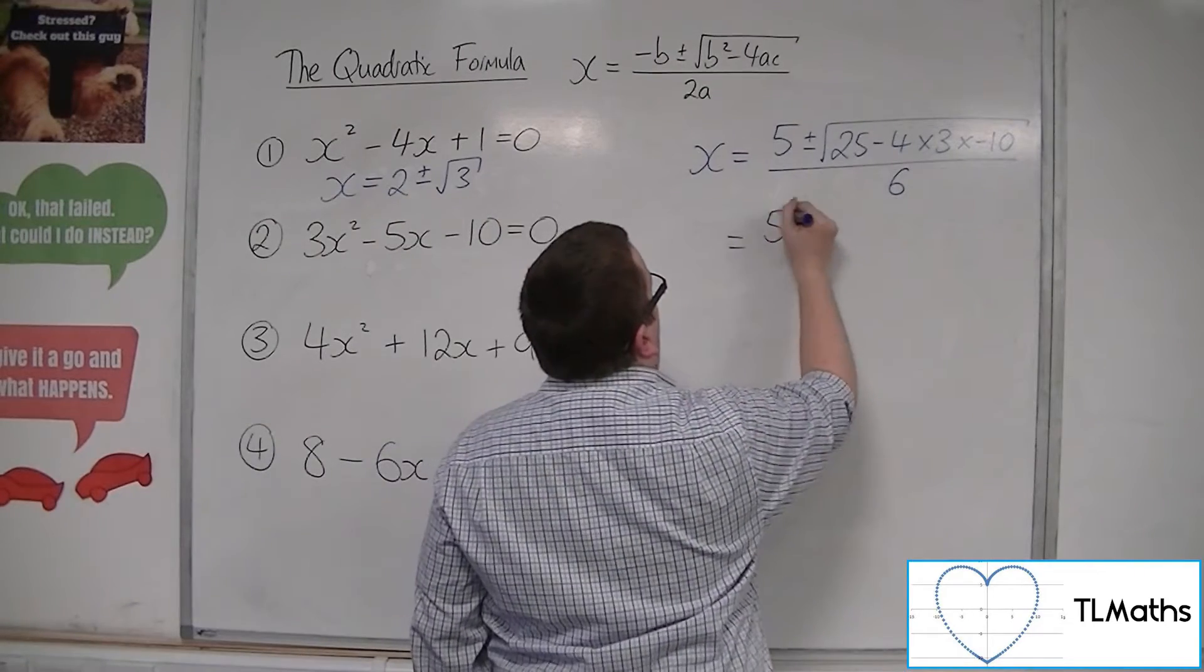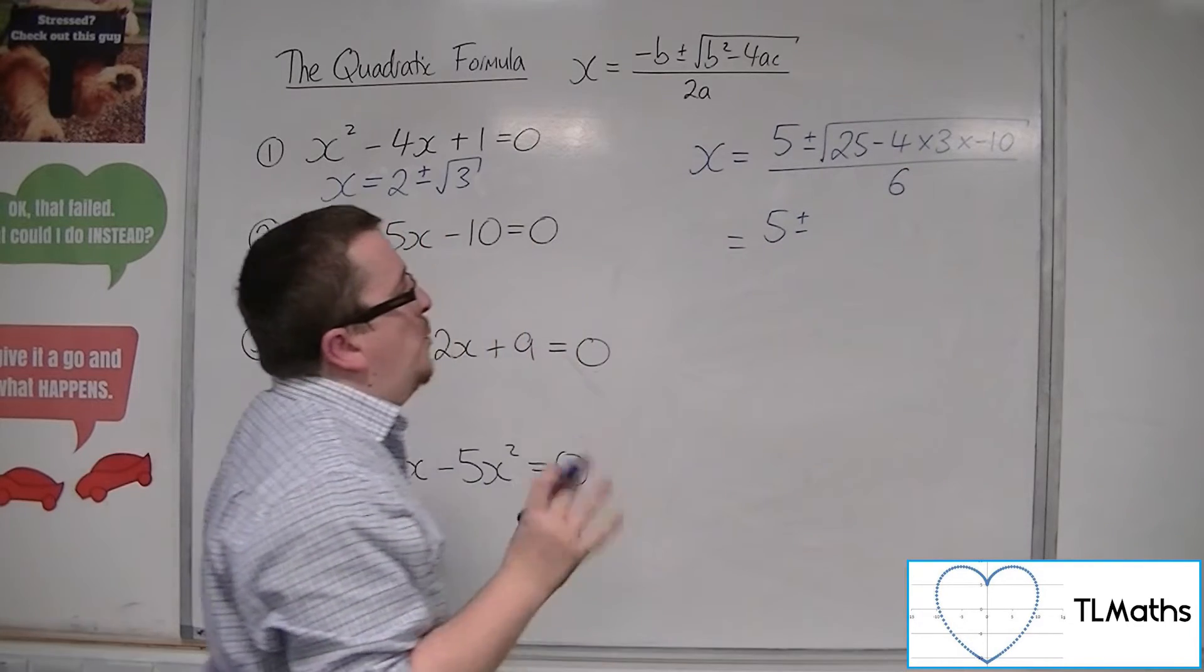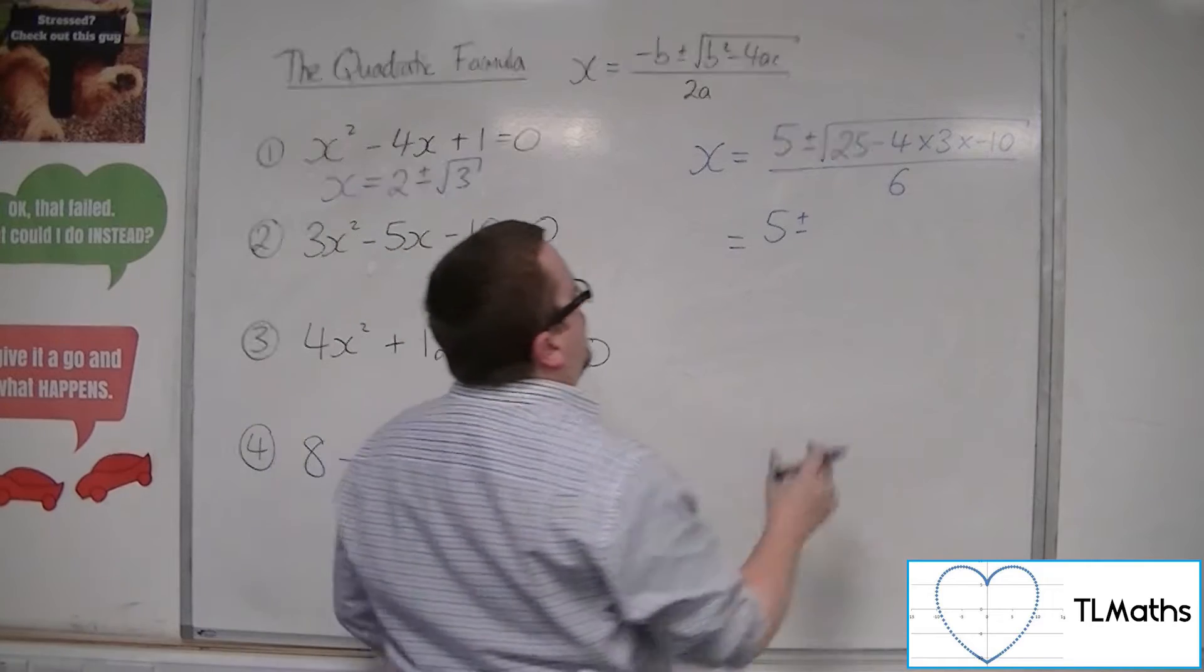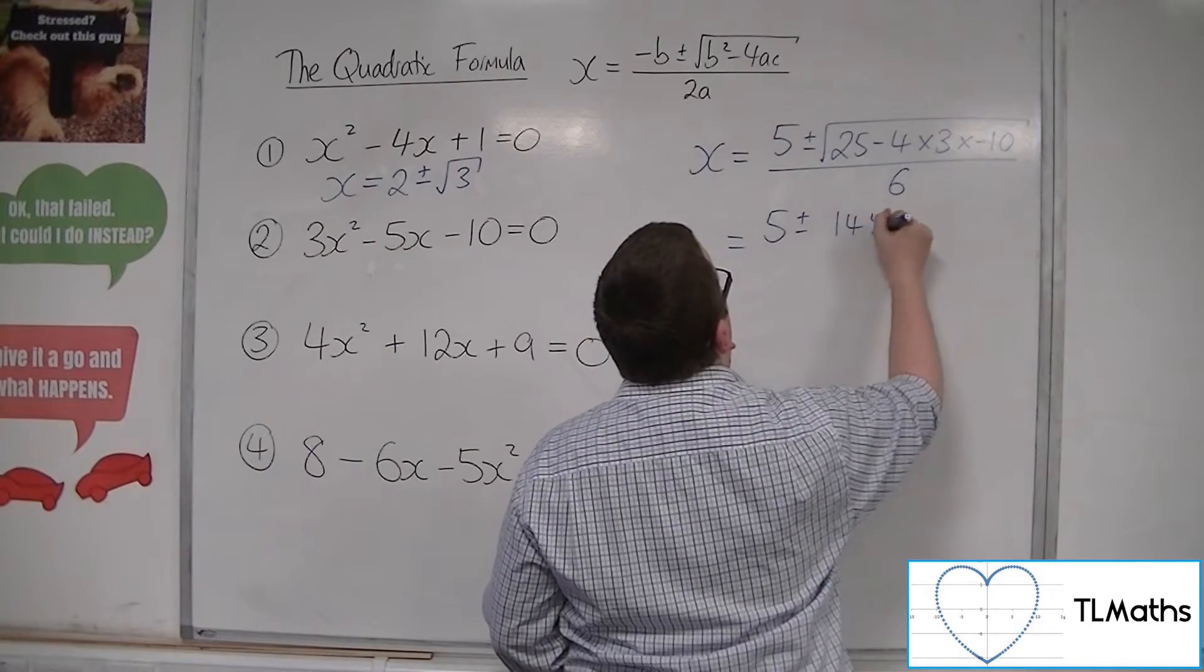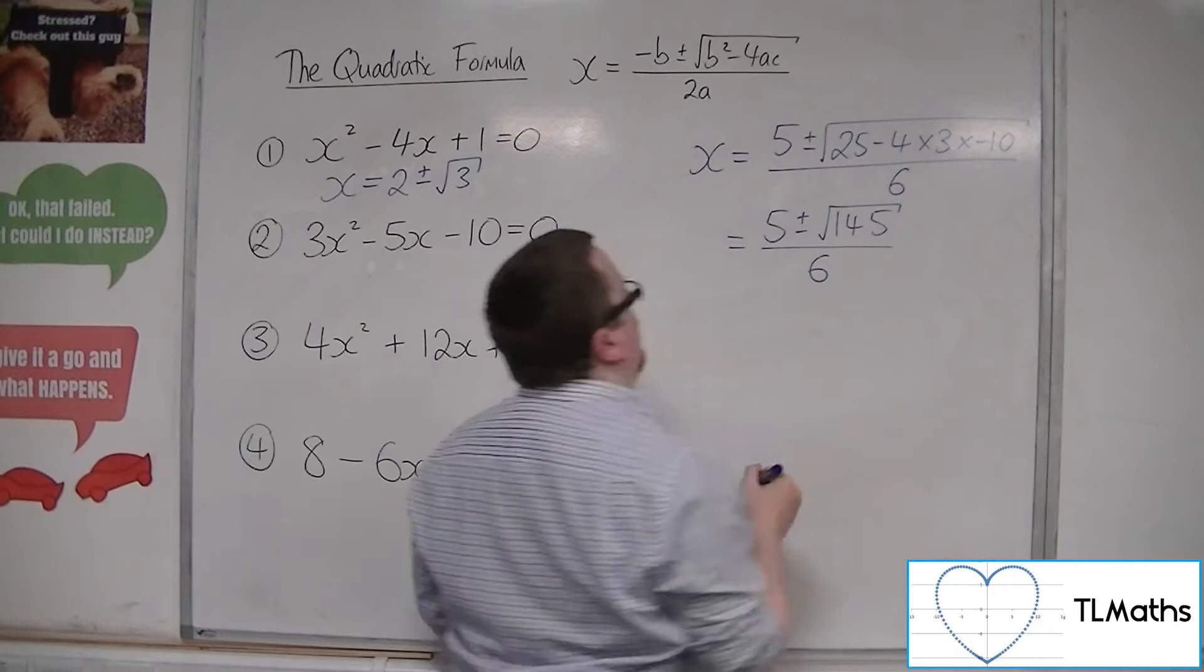So we have 5 plus or minus 25, so 4 times 3 is 12, times by 10 is 120. So we get 145 inside the square root all over 6.